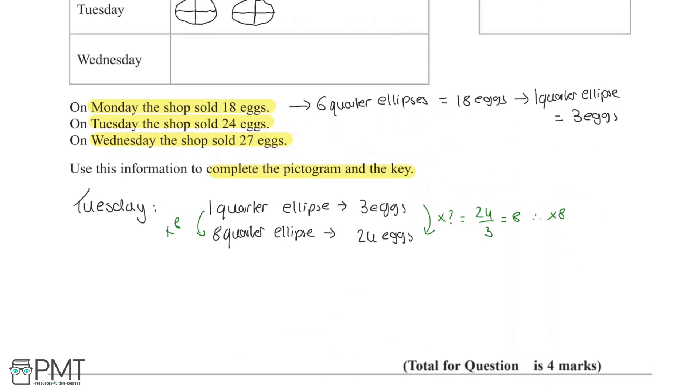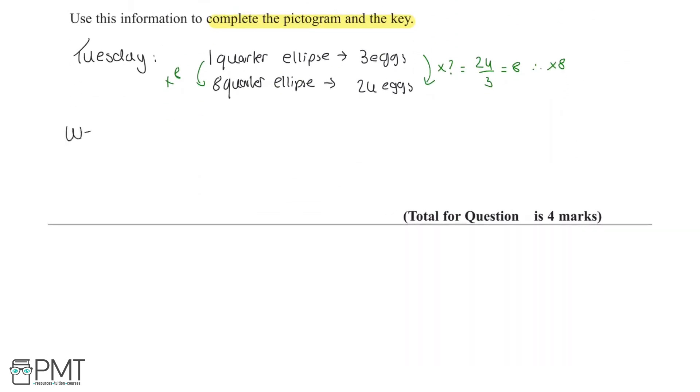Now we're going to look at Wednesday. For Wednesday, again, we know that 1 quarter ellipse is 3 eggs. On Wednesday we need 27 eggs. So what we need to do is we need to work out what we multiply by 3 to get 27. So the way we find this is by doing 27 over 3, which equals 9, so therefore we multiply both sides by 9. And then what we will end up with is 9 quarter ellipses is 27 eggs.